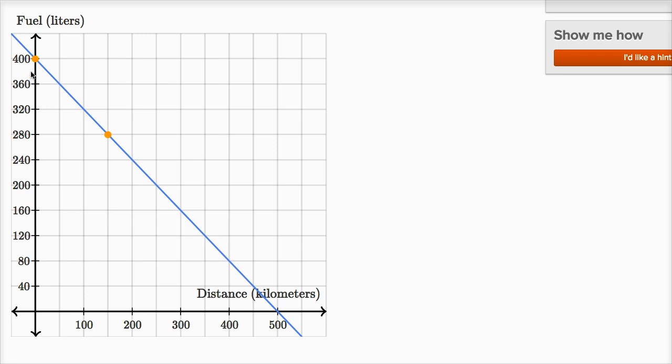If he consumed that much, we would subtract that from the amount of fuel he started with. That would tell us where this point would be. It's going to be below 400 because we're consuming fuel. Fuel should be going down as distance increases. This should be a downward sloping line.